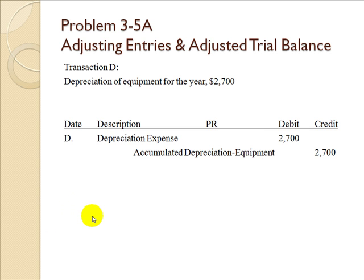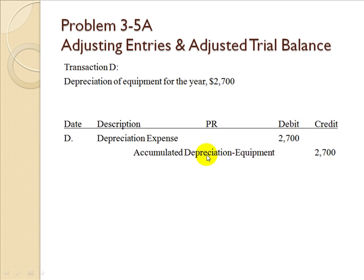In Transaction D, depreciation of the equipment for the year is $2,700. You debit depreciation expense $2,700 and credit accumulated depreciation for equipment $2,700, updating this account and creating a new book value.